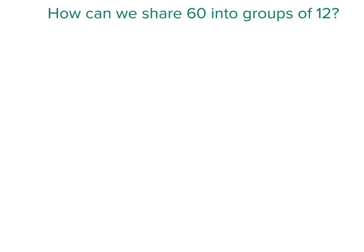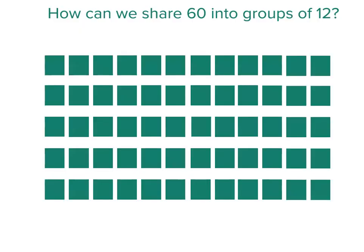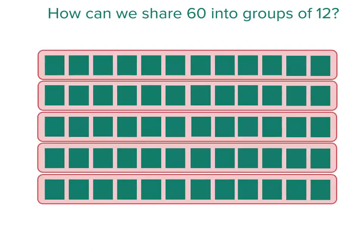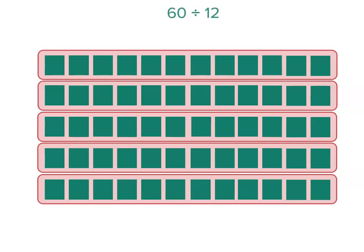With larger numbers, we can still see how an array could help us share 60 into groups of 12. Our rows have 12 pieces, so we can see how many rows of 12 we have. But we can also write that as a division problem. We can write that as 60 divided by 12, 60 shared into groups of 12.